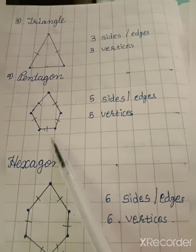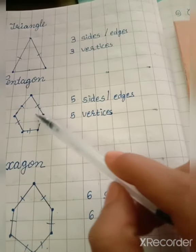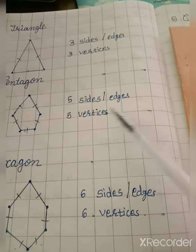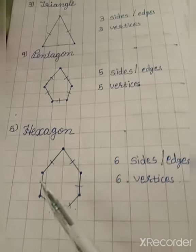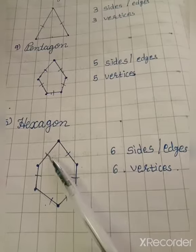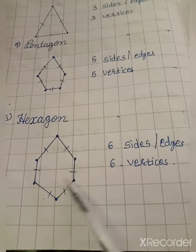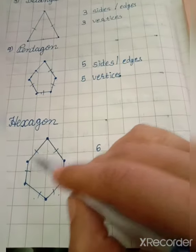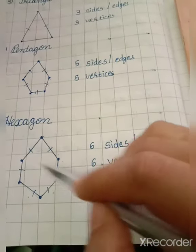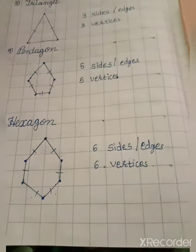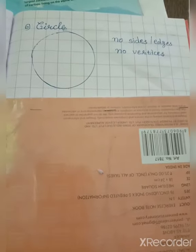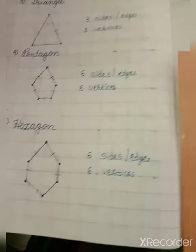Then draw a pentagon and write: five sides or edges, and five vertices. Then draw a hexagon — in a hexagon there are six sides and six vertices. Finally, draw a circle — no sides, no edges, no vertices. You will draw all six shapes in your CW book.